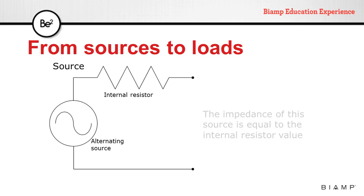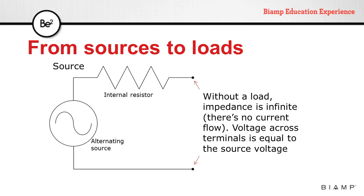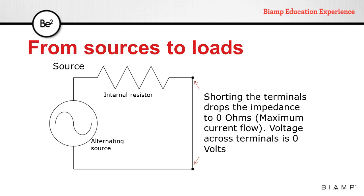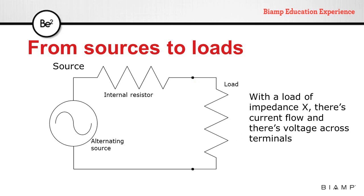When we represent circuits, we can say that the source is an alternating source of energy and it will have an internal resistor. Without anything connected to the terminals of that source, there is no current flowing through that circuit — in this case, impedance is infinite — and if we were to measure the voltage across those two terminals, it would be the same as the alternating source. If we connect those two terminals with a piece of wire, we are creating a short; we will have maximum current flow and the voltage difference between those two terminals is going to be zero. If we put a load of certain impedance, some current will flow through that load and we can measure the voltage across the terminals — it's not going to be as large as the alternating source, but it's not going to be zero either.